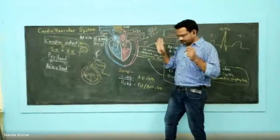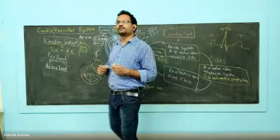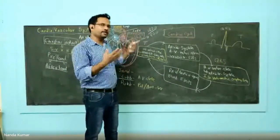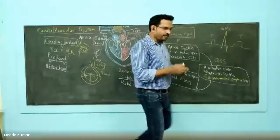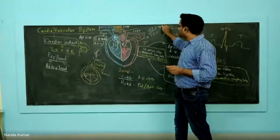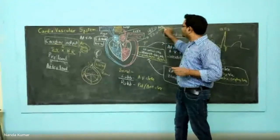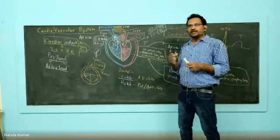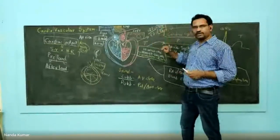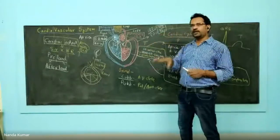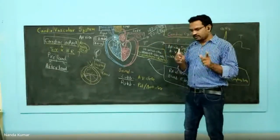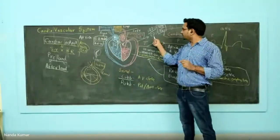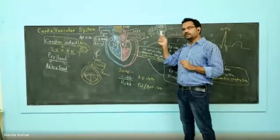This is normal blood pressure. What is hypertension? Hypertension is anything greater than or equal to 140 by 90 mmHg. Systolic pressure becomes 140, diastolic pressure becomes 90 — that is called hypertension. Systolic pressure increased 20 units, but diastolic rising only 10 units causes hypertension.